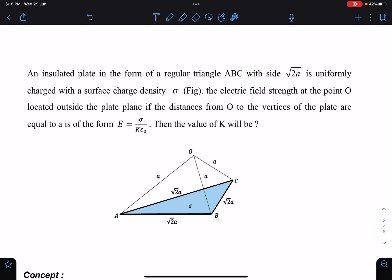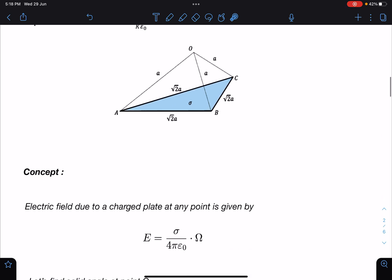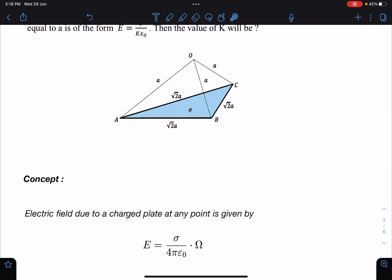Concept-wise, for a charged plate we can always write the electric field at any point as E = (σ/4πε₀) times the solid angle the plate is subtending at that particular point.